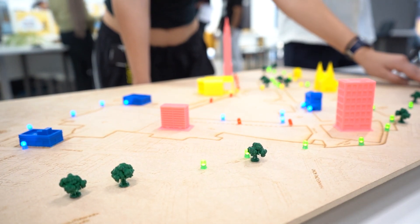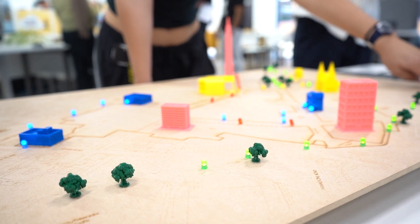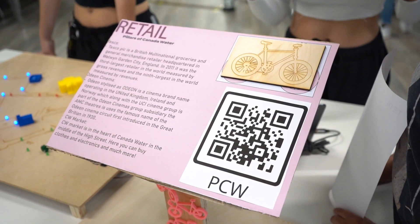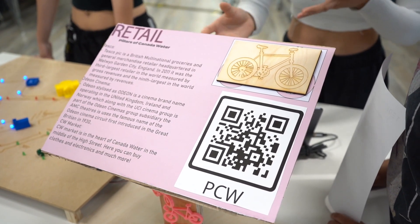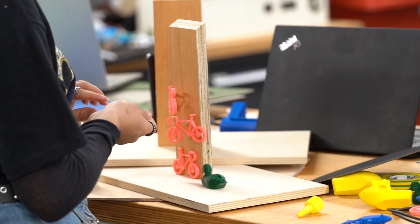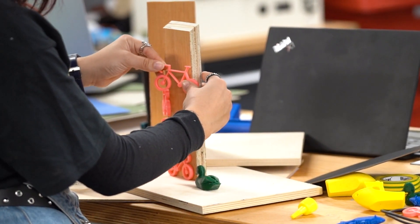We've got a retail, food, nature, and historical trail. Where the marks are with the LED lights on our model is where there are going to be monuments. On the face of each monument there's a description of where you are, a QR code that links to our website, and the symbol to show which route you're on.